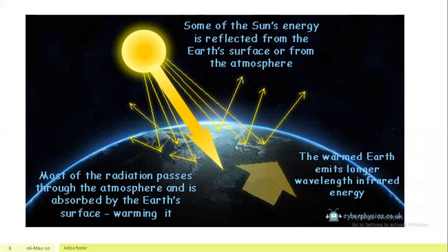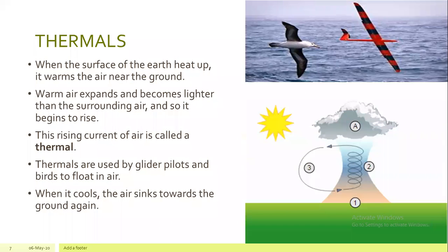When the surface of the earth heats up, it warms the air near the ground. Warm air expands and becomes lighter than the surrounding air, and so it begins to rise. This rising current of air is called a thermal.